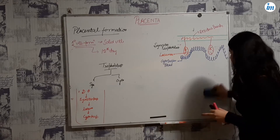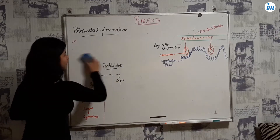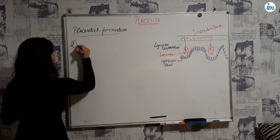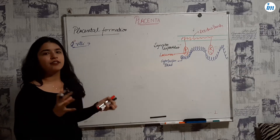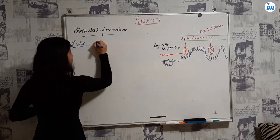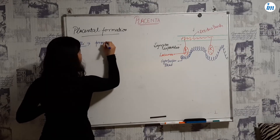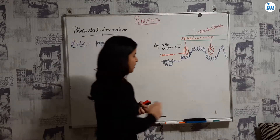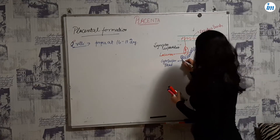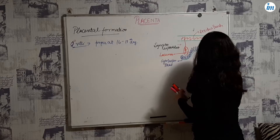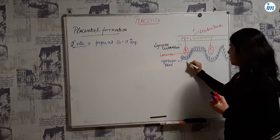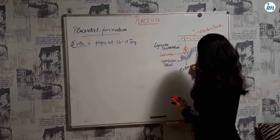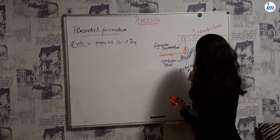Secondary villi formation: secondary villi form at day 16 to 17. All the same structures are present as in primary villi, with the addition of one layer — the extraembryonic mesoderm, shown as a green layer.